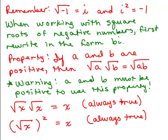Before working some new problems, let's remember a few things. Square root of negative 1 is written as i — that's what it equals. And i squared equals negative 1. Those are the definitions of i. Now, working with square roots of negative numbers, you have to make sure you first rewrite in the form bi, so we're not going to leave a negative number underneath the square root sign. Here's the property for square roots: if a and b are positive, then the square root of a times the square root of b equals the square root of ab.